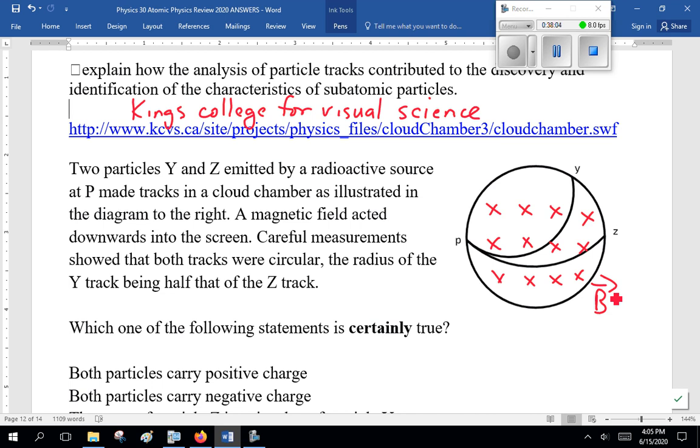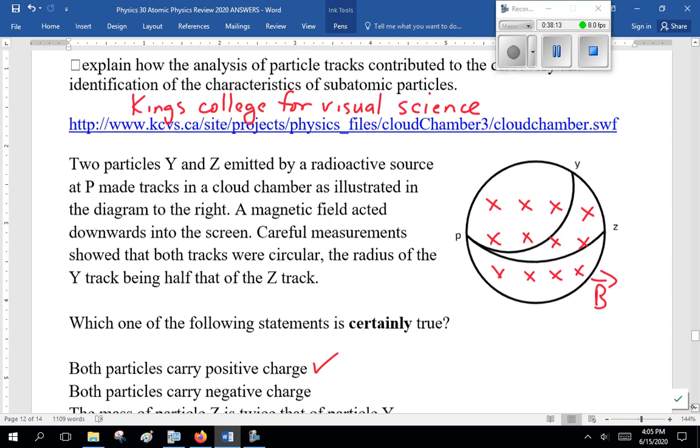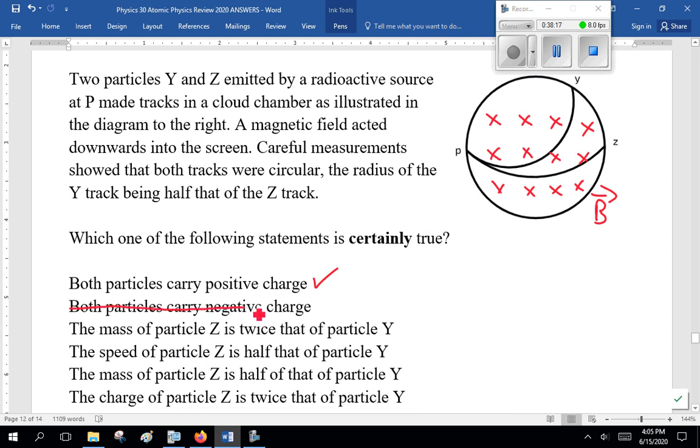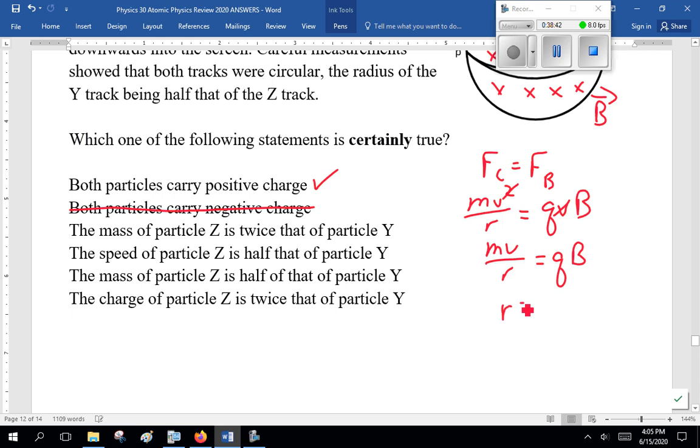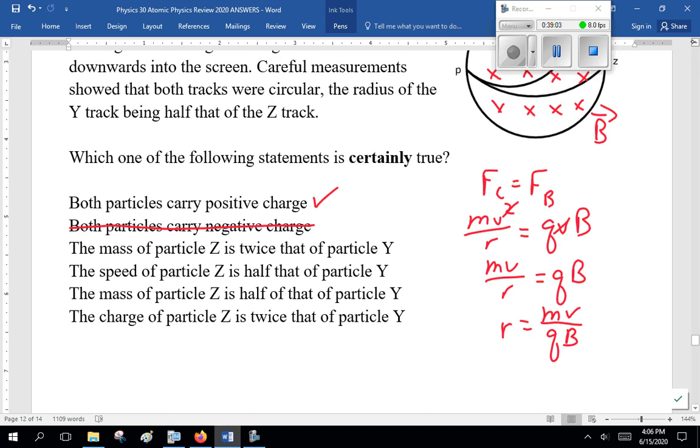Careful measurements showed that both tracks were circular, the radius of Y track being half the radius of the Z track. Which of the following statements is certainly true? Both particles carry positive charge. Well, let's look. Third left-hand rule. If we grab a right-hand, middle finger shows direction of magnetic field in. Direction of charge is to the right and thumbs up. So, yes. Both particles carry positive charge. If we try it with the left-hand, they would curve down. So, negative charge is wrong. Now, here we're getting into mass and charge. F sub C equals F sub B. MV squared over R equals QVB. M V over R equals QB.